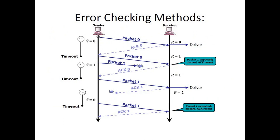The sender sends a packet and the receiver checks it, for example through parity. If correct, the receiver sends an acknowledgement. If the acknowledgement times out and reaches the sender after the time limit, instead of sending the next packet, the same packet is resent. The receiver, having already received packet zero and expecting packet one, receives packet zero again, discards it, and sends an acknowledgement saying it already has that packet — send the next one.